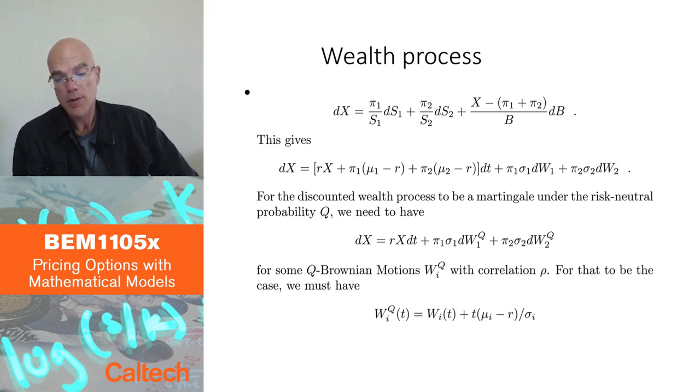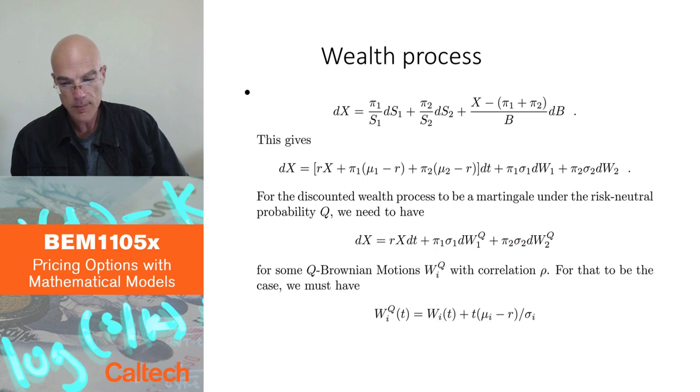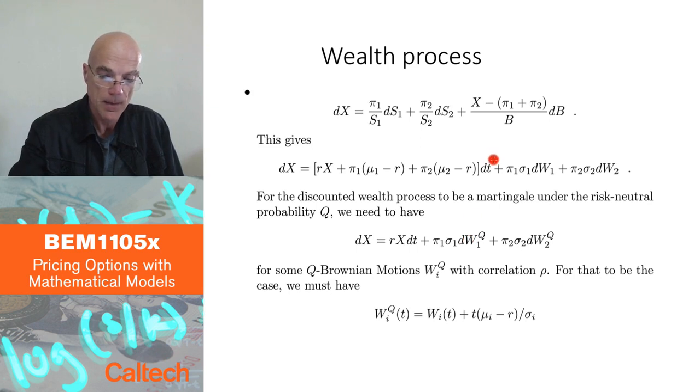And then when we change to the pricing probability, we want this to be a martingale when discounted, which means before discounting, we want Rx dt. It would disappear once we discount, but before discounting, we want this. And then we would just change Brownian motions to W1Q and W2Q. Here you have pi1 sigma 1, pi2 sigma 2. And if you compare this to this, then for these two things to be equal,